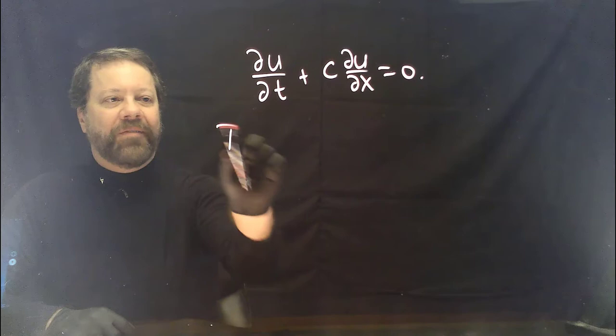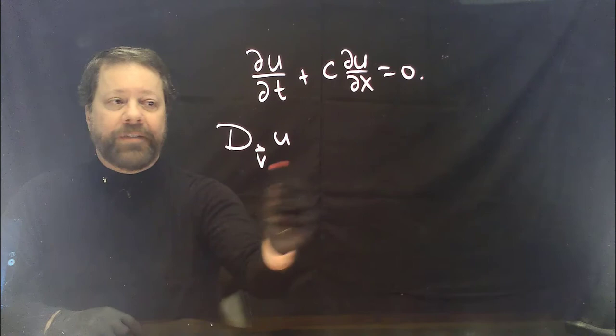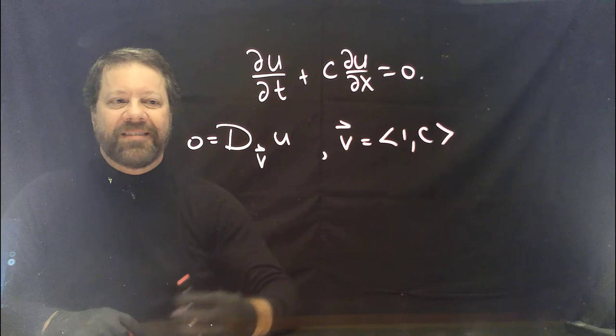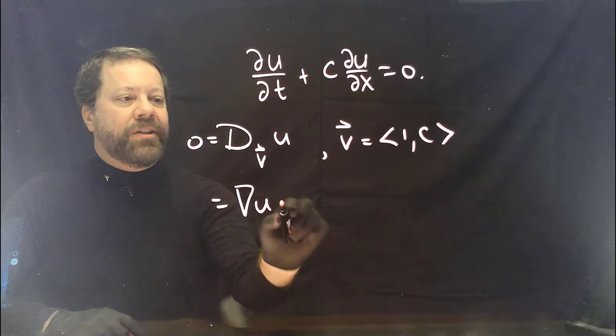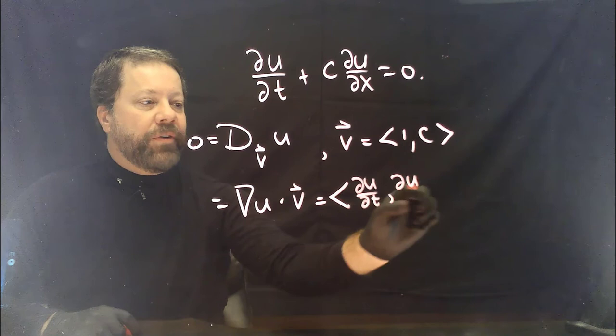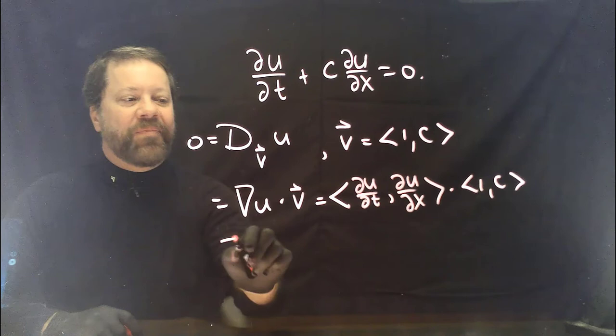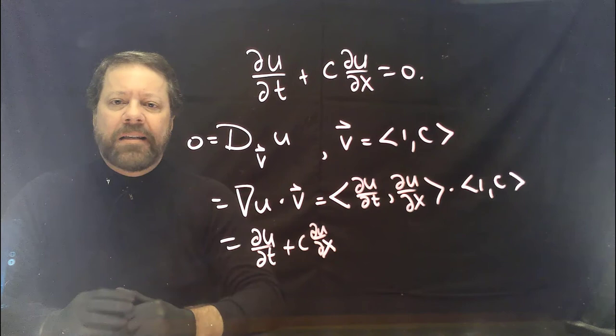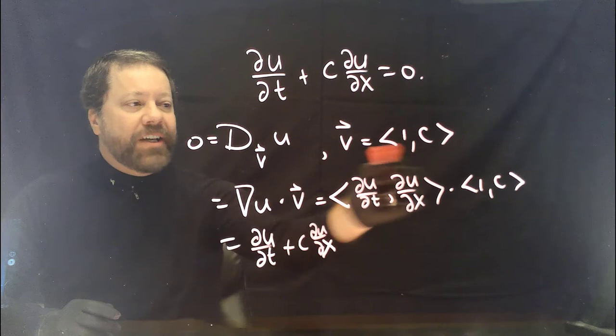That represents the rate of increase of f as you move in the direction of vector u. We can make our PDE look like a directional derivative. In this case my function is u, so I'll use the vector v, where v equals (1, c), not necessarily a unit vector. The gradient of u dotted with v gives du/dt plus c times du/dx, and if that equals zero, u is constant as you move in the direction of this vector.